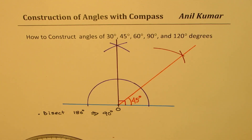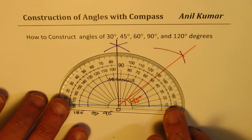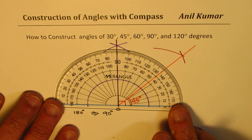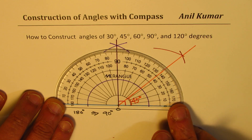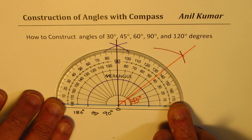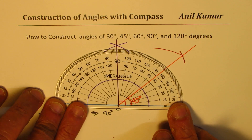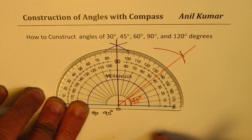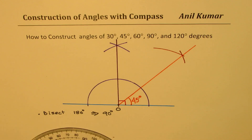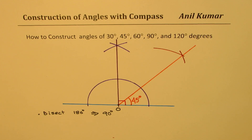Let's check: placing the protractor here with zero at O, you can see the line drawn is 45 degrees — there may be a very minor difference, but it should be exact. That's how we get 45 degrees.